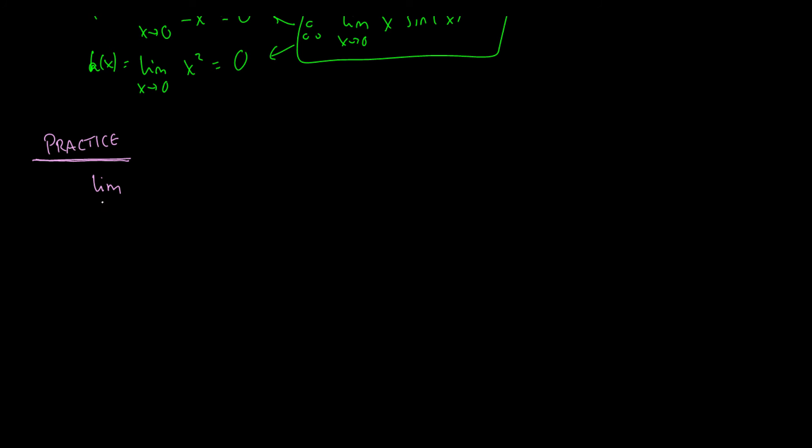Okay, enough rambling. You're going to find the limit as x goes to zero of x to the fourth times cosine of two over x. All right, pause the video, see if you can do it, and we'll be back in a second.